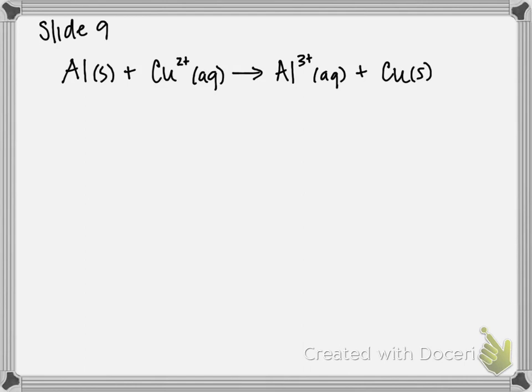The first step in balancing a redox reaction is to figure out what's oxidized and what's reduced. You might look at this equation and think there's one aluminum on each side and one copper on each side — but for redox reactions, not only do we have to balance the compounds, we also have to balance charge, meaning electrons. On the reactant side we have a plus 2 charge, and on the product side a plus 3 charge, so this is not balanced as currently written.